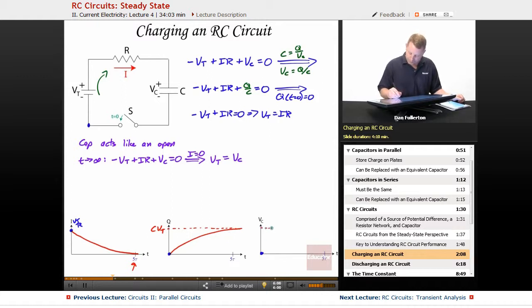And the voltage across our capacitor, well, it started at zero. We know after a long time that was going to be equal to VT. So we're going to follow that same asymptotic relationship, getting very close when we get to about five tau.